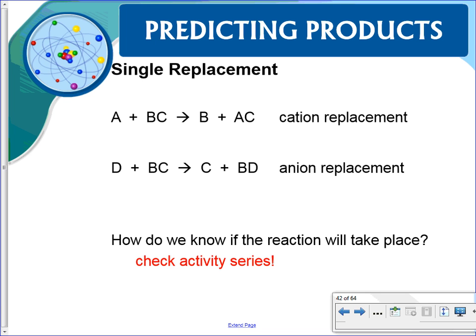So we have single replacement. For a single replacement we could have a cation replacement, which means A is going to replace the cation, and you get an element or compound, or an anion replacement where the single element actually goes to replace the anion.